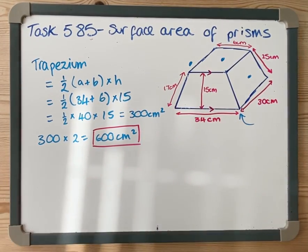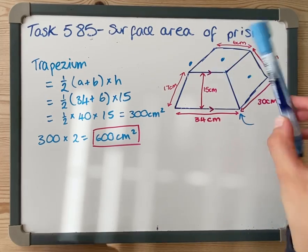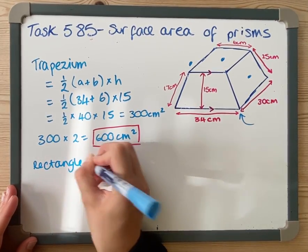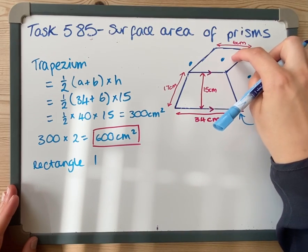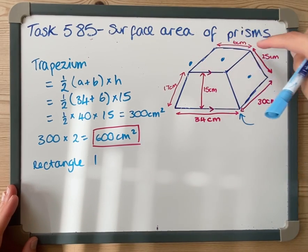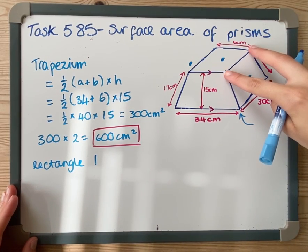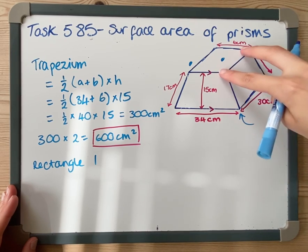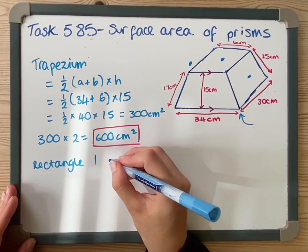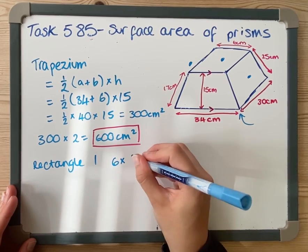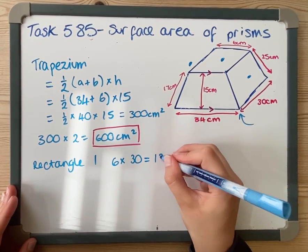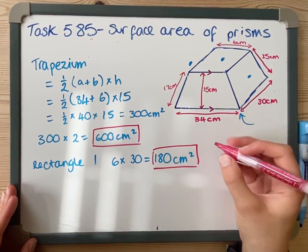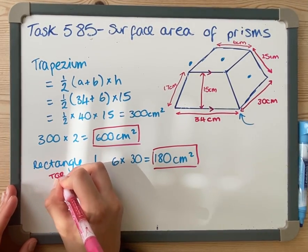I've now got to think about my different rectangles. I'm going to think about the rectangle on top first. Remember, there are four different rectangles. This rectangle on top, it's got a width of 6, and I need to know what that length is. Fortunately, that length is the same as this length, so that must be 30. So we're going to do 6 times 30, which is 180 centimeters squared. That's rectangle one on top.